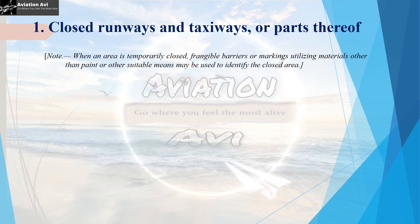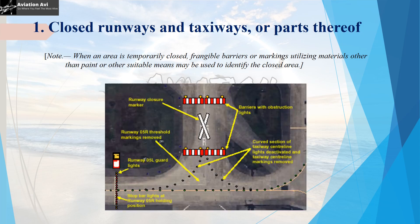When an area is temporarily closed, fragile barriers or markers utilizing material other than paint or any other suitable material may be provided in order to identify the closed area. Let us consider the case when runway 05R is closed. In this case, there is a runway closure marker and there are barriers and obstruction lights installed to denote the part that is closed. The taxiway centreline marking leading to the runway has been omitted and the lights leading to the runway have been deactivated. The threshold marking at the beginning of runway 05R has been omitted. There is also a stop bar installed. These are the measures that can be used to carry out construction or maintenance work safely at an aerodrome.